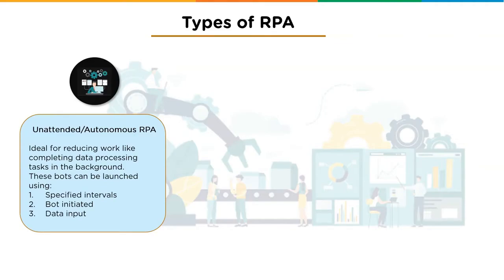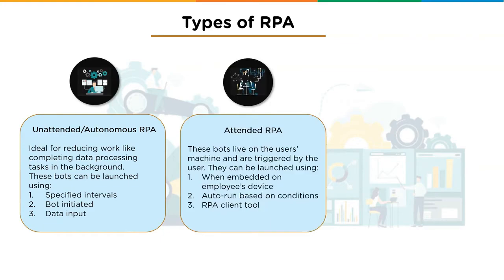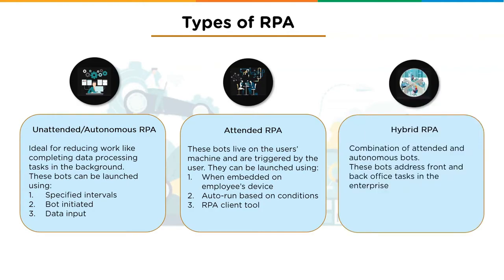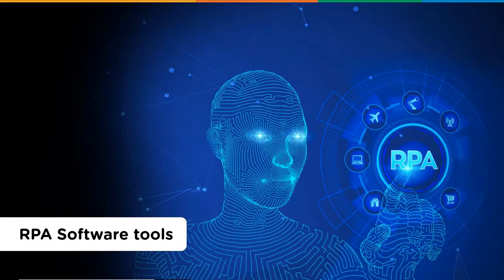Types of RPA: unattended or autonomous RPA is used for background tasks like data processing, launched at specific intervals or triggered by data input. Attended RPA bots live on the user's machine and are triggered by the user, requiring some human interaction. Hybrid RPA combines attended and unattended RPA to address both front-end and back-office tasks in the enterprise.